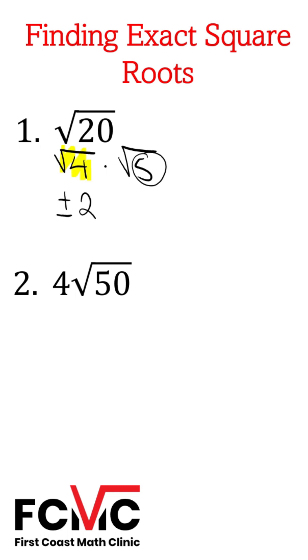5 is a prime number. We can't factor it. We can't take the square root. So we're going to multiply positive and negative 2 times square root of 5. And that's going to be our answer for number 1.